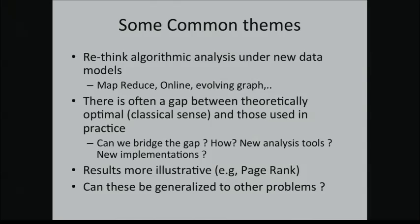One way is to come up with new tools to analyze the complexity of algorithms and move away from the classical way we analyze algorithms. The other is: can we come up with new implementations of algorithms in these new paradigms? In all talks, the results are more illustrative rather than conclusive, and all talks use PageRank heavily to illustrate the ideas.